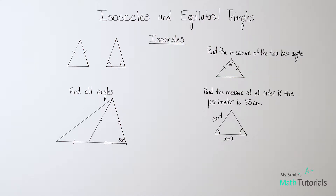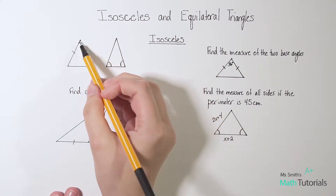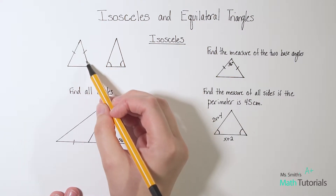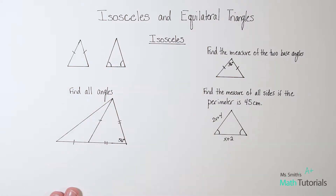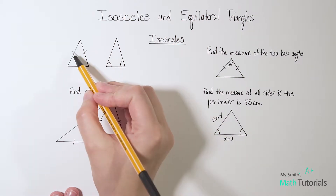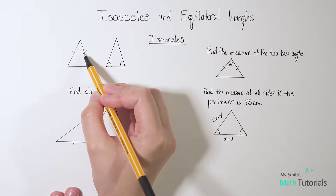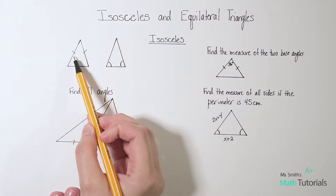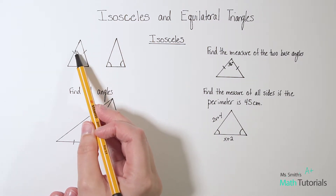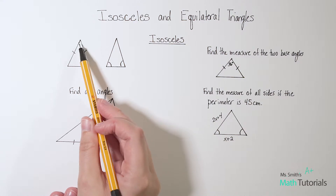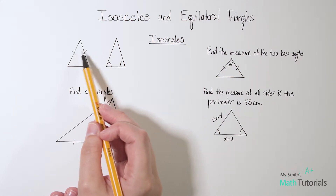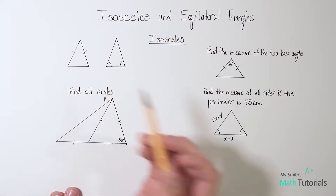The first one we're going to talk about is isosceles triangles. Isosceles triangles essentially mean that two of the sides are equal, congruent to each other, and then one of the sides is not. Sometimes you'll see this marked with — I call these tick marks. So when you see tick marks like this, it means this side is congruent to the other side with the matching tick. So these two sides are equal.